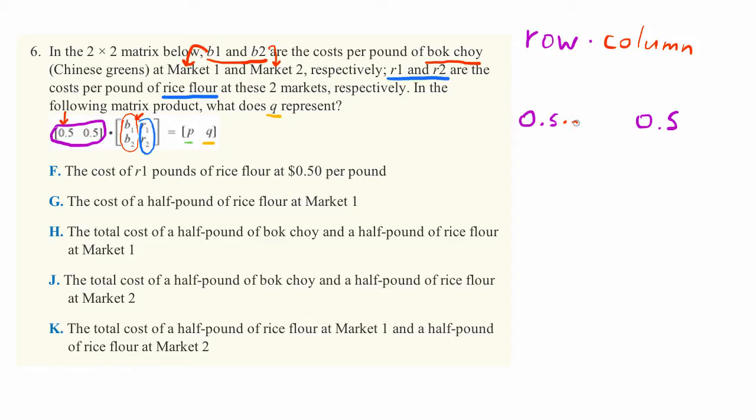So we have 0.5 times B1. And then we add this to the second item in the row multiplied by the second item in the column.